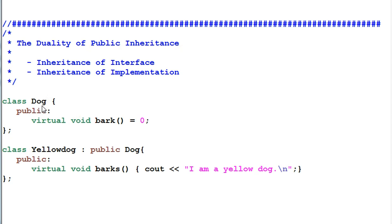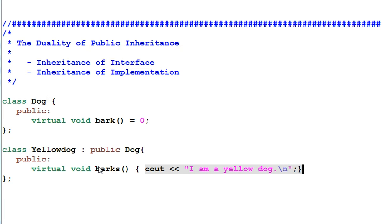Our class dog has a bark function, and the bark function is a pure virtual function. The yellow dog, which is derived from dog, overrides the bark function with its own implementation. In this case, the yellow dog inherits the interface of the bark function and does not inherit the implementation, because the bark function doesn't have an implementation anyway — it's a pure virtual. So this is an interface-only inheritance.